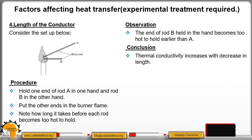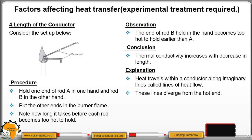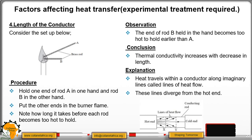Thermal conductivity increases with a decrease in length. Explanation: heat travels within a conductor along imaginary lines called lines of heat flow. These lines diverge from the hot end towards the cold end, as shown in our diagram. If the material is short, it has more lines of heat flow per cross-section and therefore becomes hot faster. If it is longer, like rod A, there are fewer lines of heat flow and it takes a longer time to become hot.